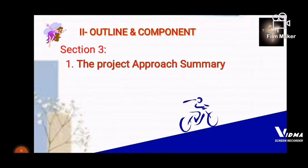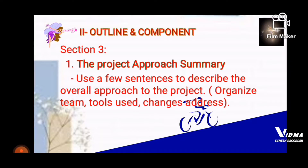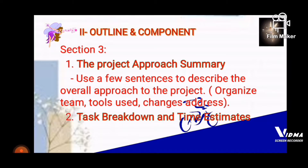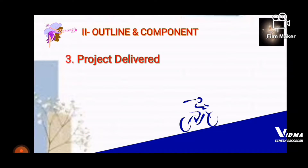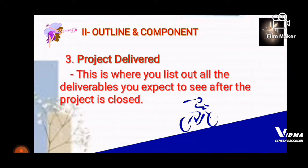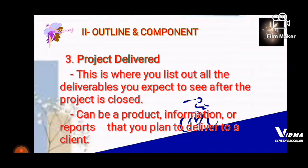Still in section three, the Project Approach Summary uses a few sentences to describe the overall approach to the project, organizing team tools used and changes addressed. Task Breakdown and Time Estimates provide a detailed schedule. The Project Deliverables section lists all deliverables expected after the project is closed — this can be a product, information, or reports planned to be delivered to a client.